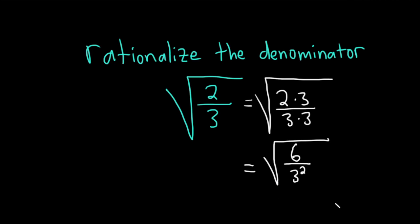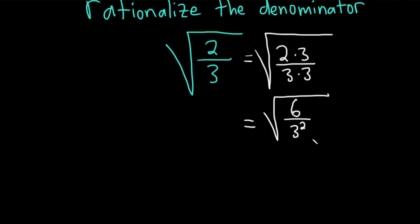This is good because now we have something squared, and that's the whole point. That's why we multiplied by 3 on the bottom—we're just multiplying by 1 when we do this.